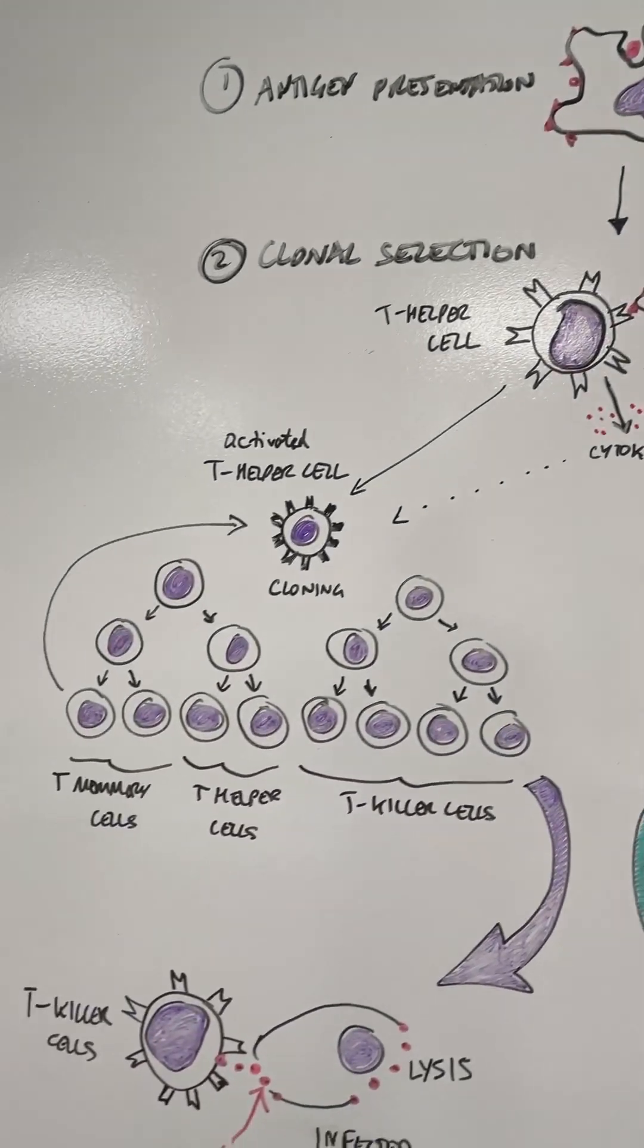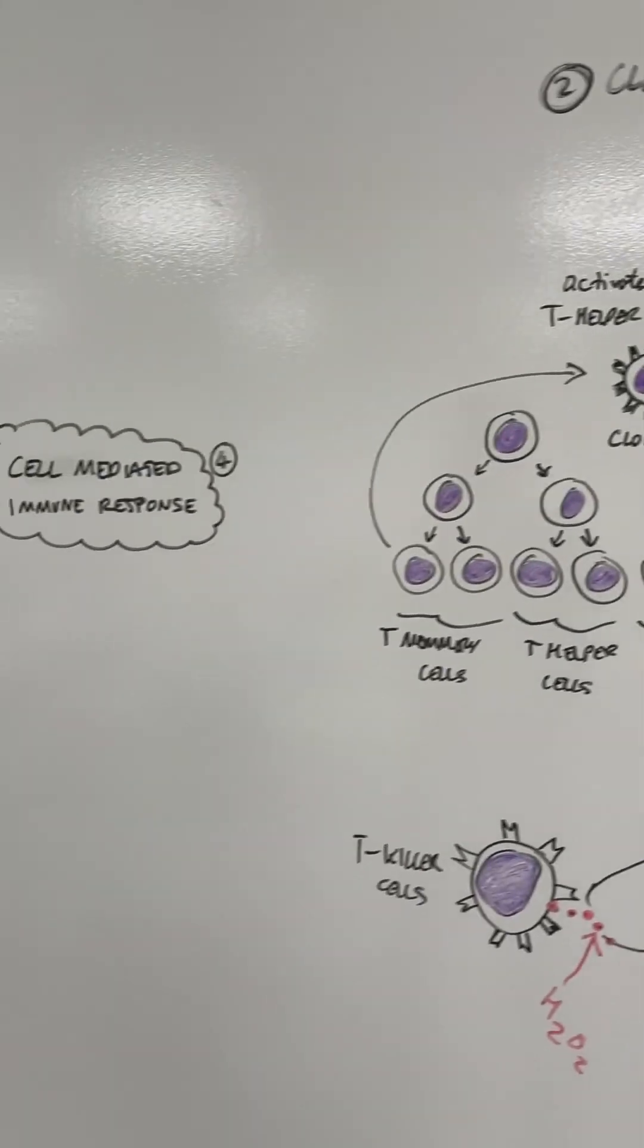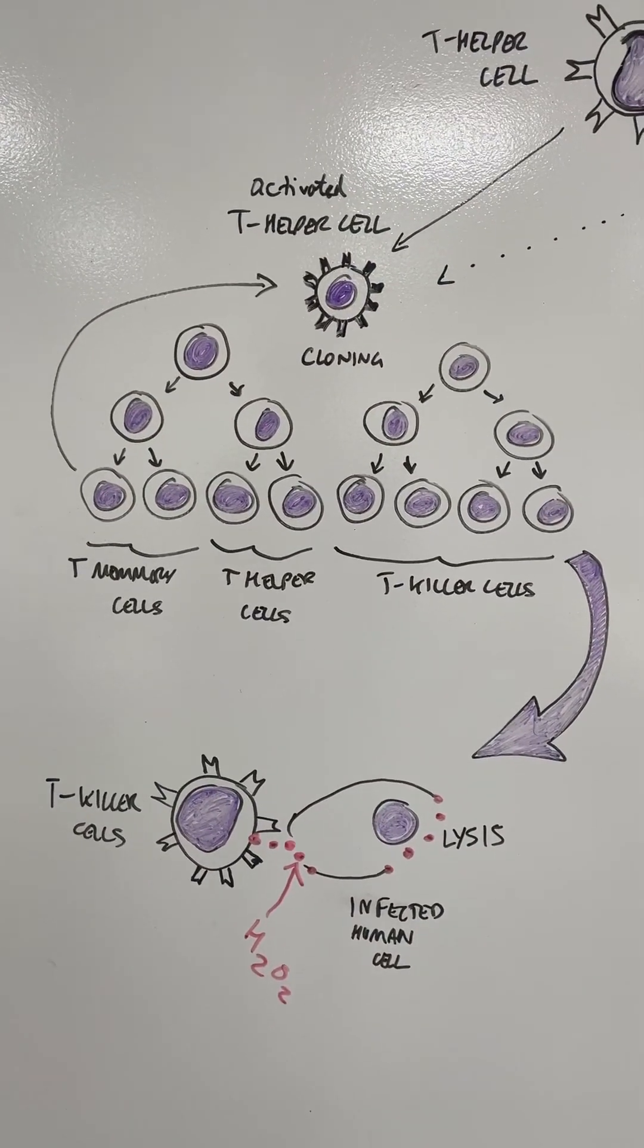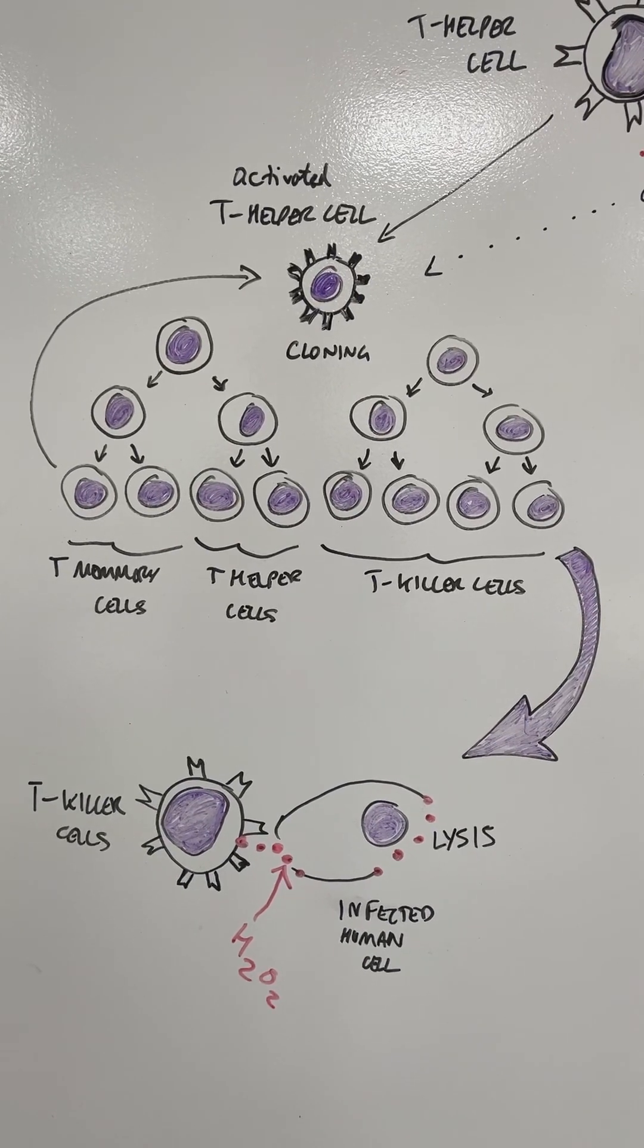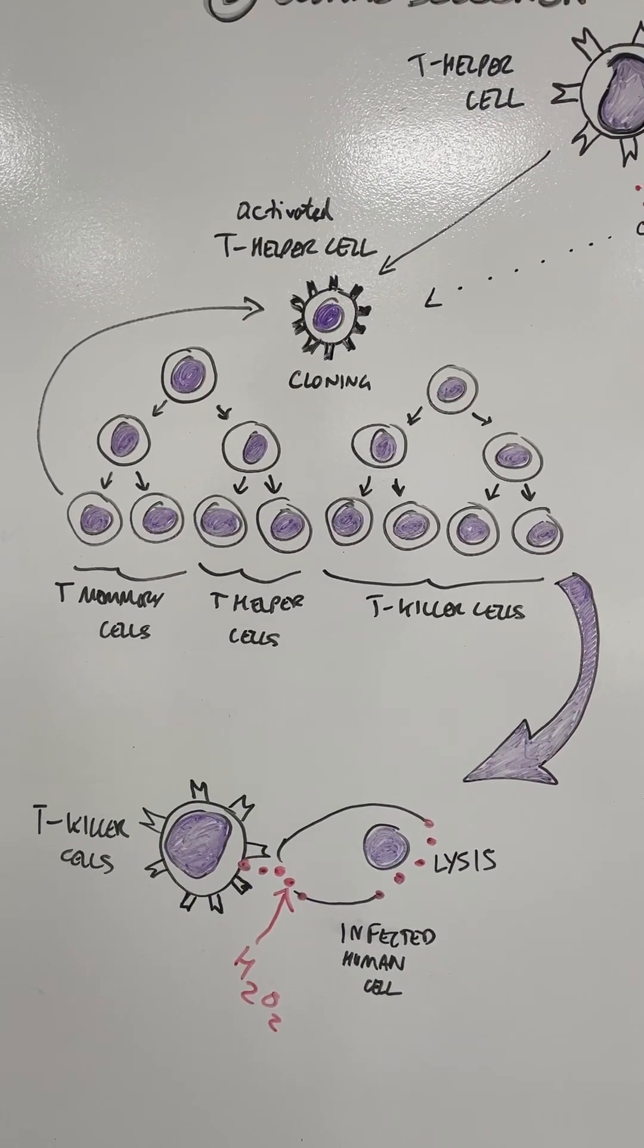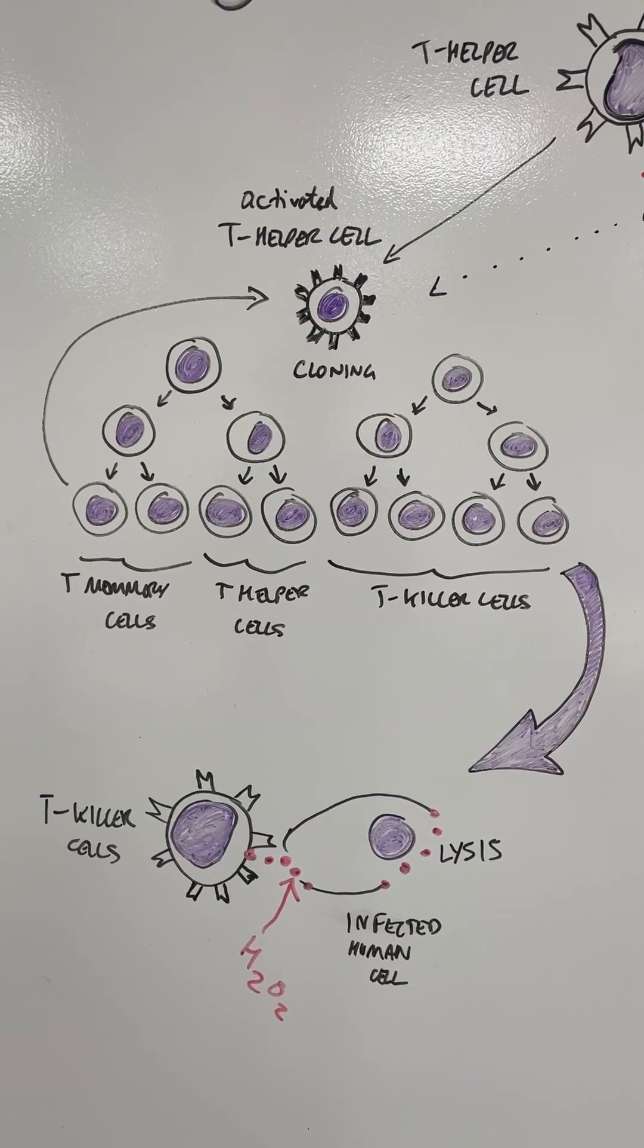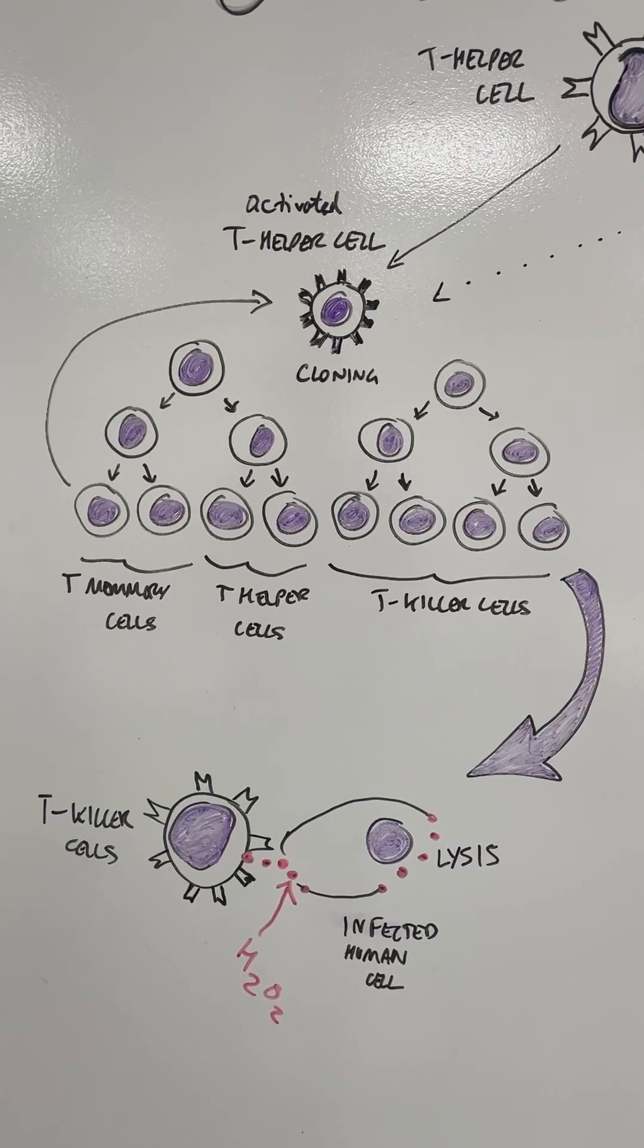One of the things it can do is move on to what we call the cell-mediated immune response. Here, that correct T helper cell will then be cloned thousands of times - it's what we call clonal expansion. The cell divides by mitosis and it will turn into different types of T cells.